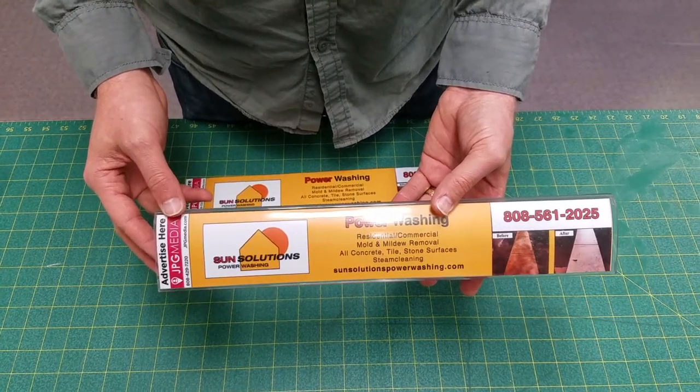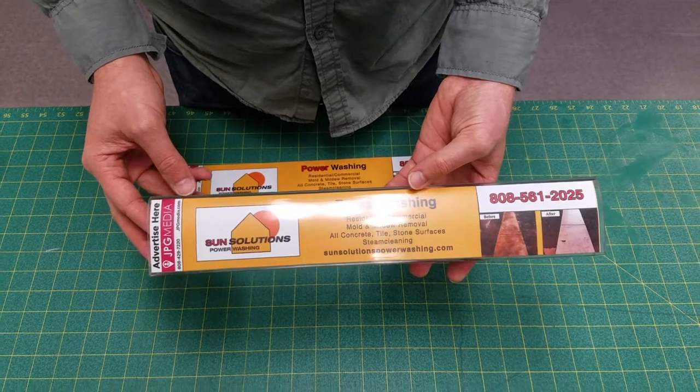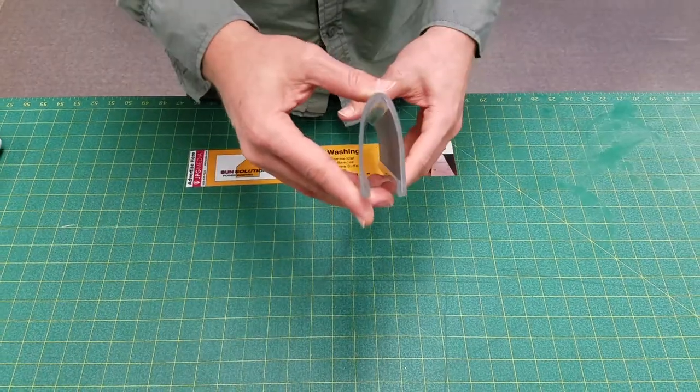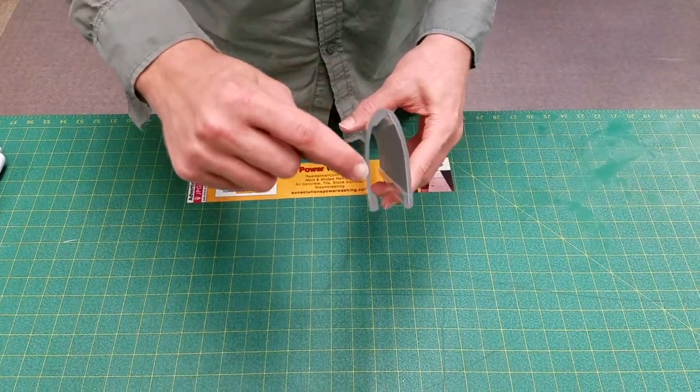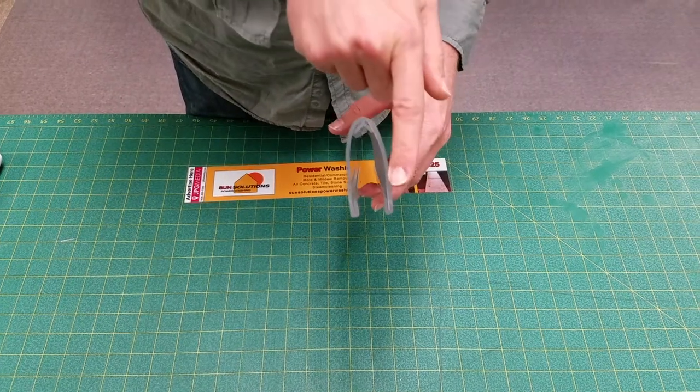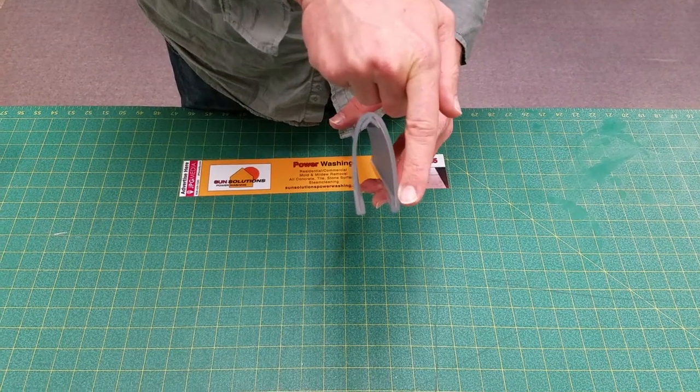I'm going to show you how to do a quick swap out of the grocery divider advertising. As you'll see here, there's a groove on this side and a groove on this side, and this is where the graphics can slide in and out.